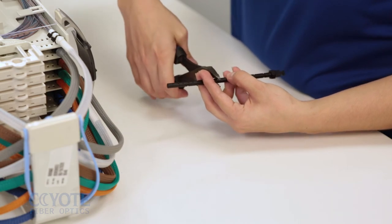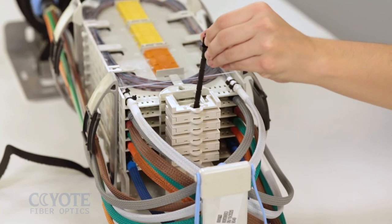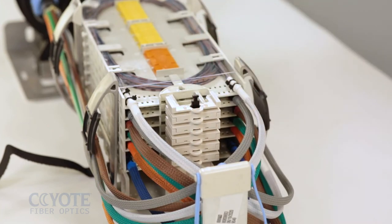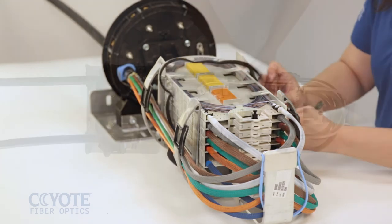Determine the number of splice trays in the organizer and trim the lock pin at the notch. Install the lock pin into the hinge bracket pocket. Secure the splice trays with the hold down strap.